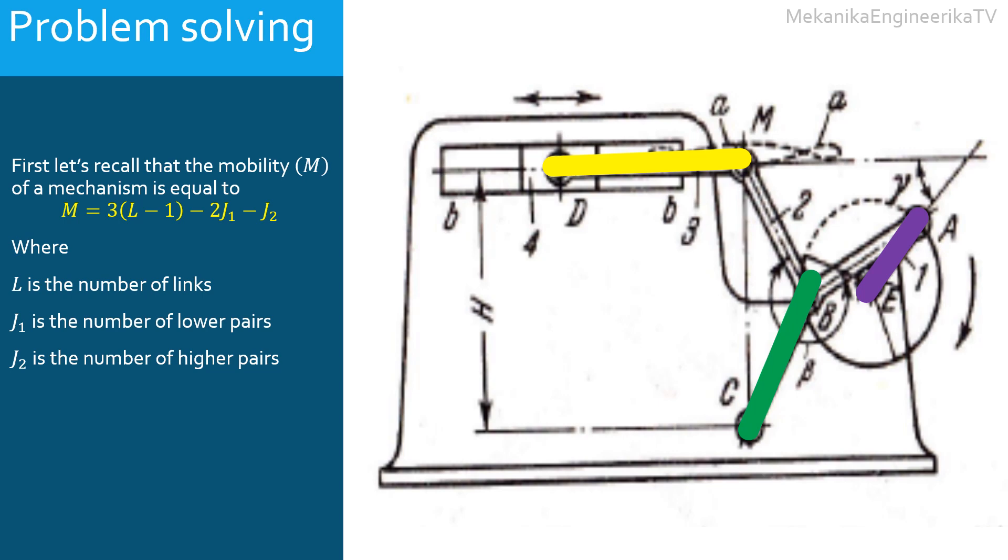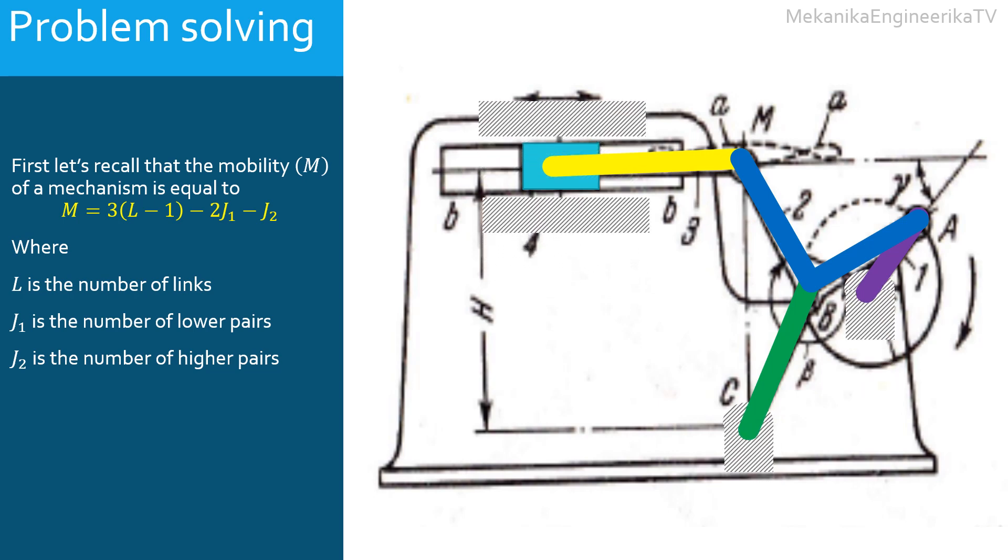The mechanism involves also a ternary link ABM. In addition to the bars and the ternary link, the mechanism involves one slider. The mechanism includes also the ground or the frame. The mechanism includes in all the ground, three bars, one ternary link, and one slider. Thus, L, the number of links, is equal to six.